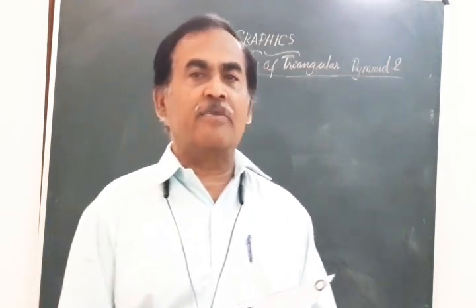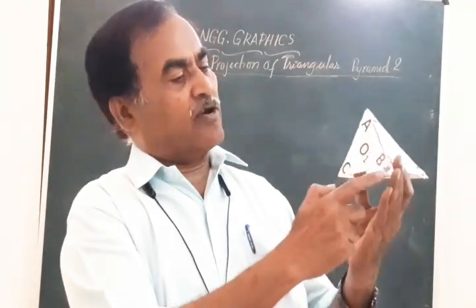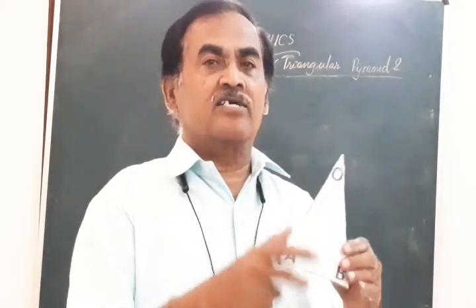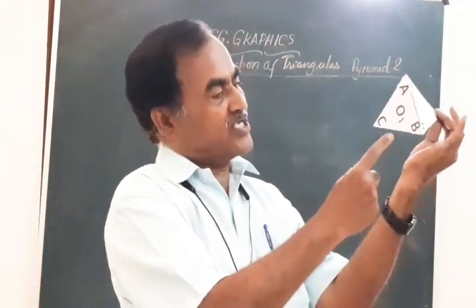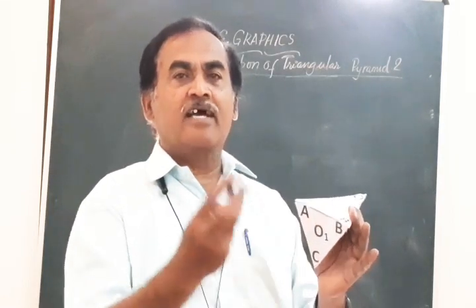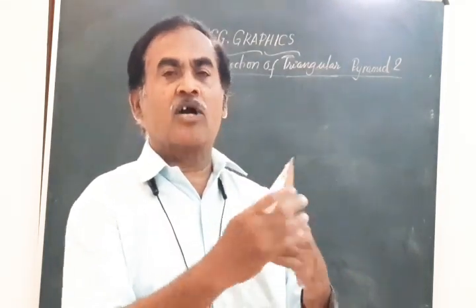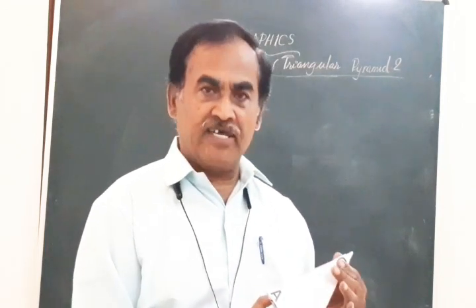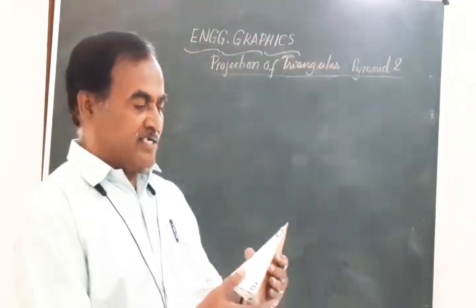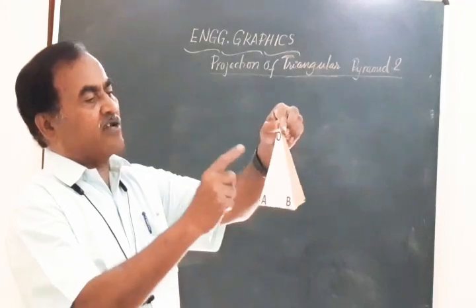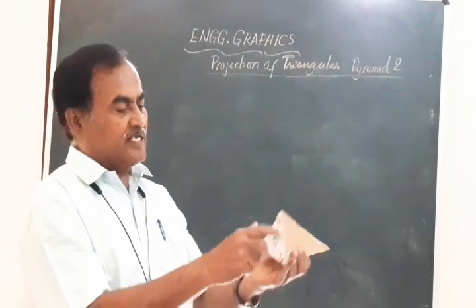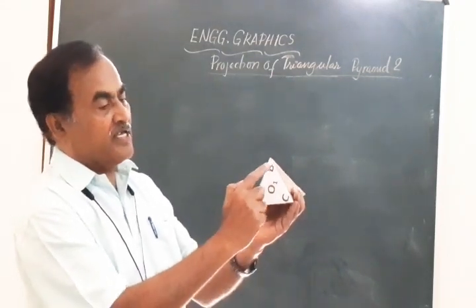By definition, a triangular pyramid is a solid having a triangular base A, B, C with a center O1 and a vertex. The vertex is connected to the three corners A, B and C by three slant edges. A triangular pyramid has got three triangular faces on the lateral surface, and all these triangular faces are isosceles triangles. The three triangular faces are O-A-B, O-B-C, and O-C-A. There will be three corners A, B and C.